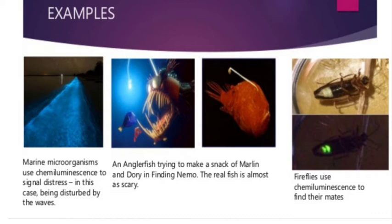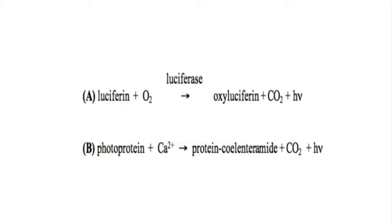The reaction observed in the body of fireflies is: luciferin plus O2, in the presence of luciferase, gives oxyluciferin plus CO2. These are the products — oxyluciferin and carbon dioxide — and light is emitted. This emitted light is called Chemiluminescent light.